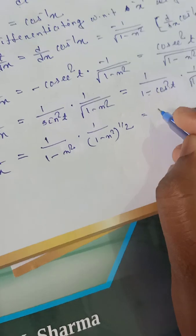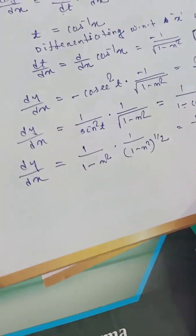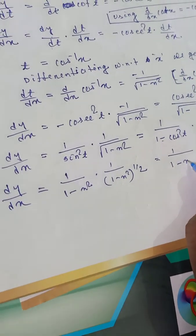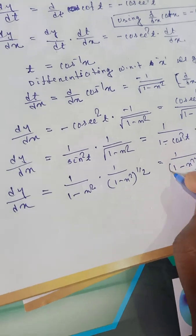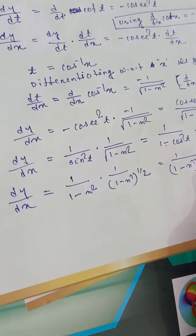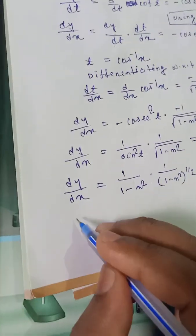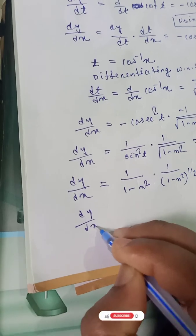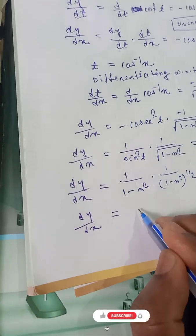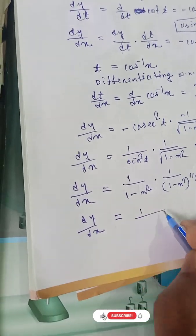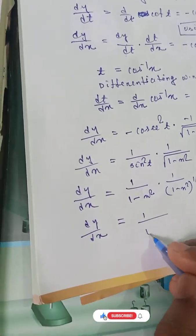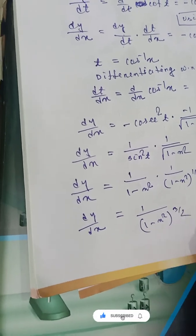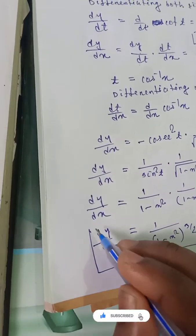Therefore dy by dx is equal to 1 divided by (1 minus x squared) to the power 3 by 2.